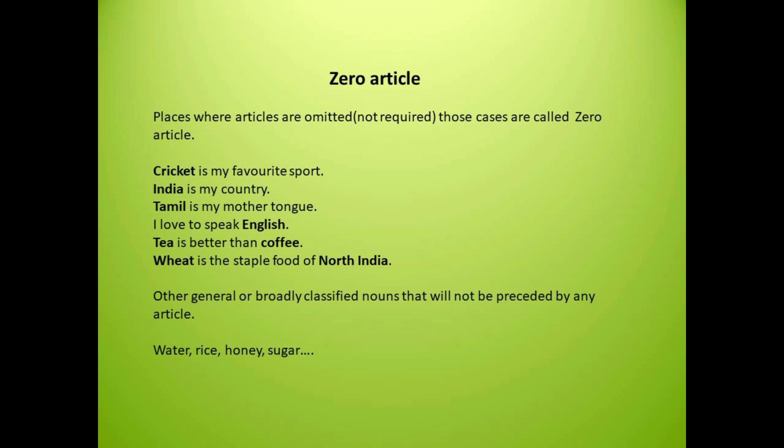Similarly, take this example: I love to speak English. Here, English is a language. So even here, we omit articles. So it's wrong if I say 'I love to speak the English' or 'I love to speak a English.' Articles are omitted before the noun English. It is: I love to speak English.